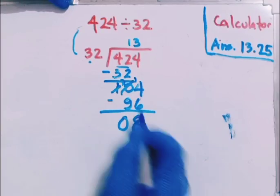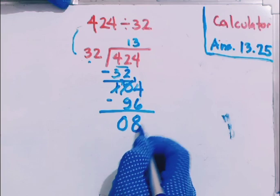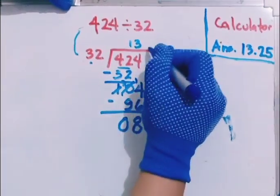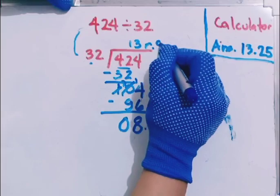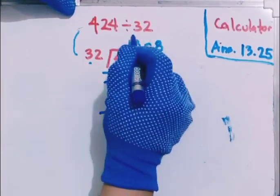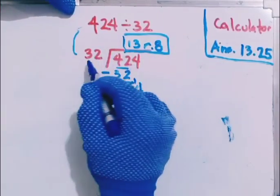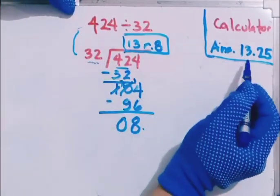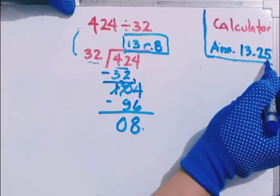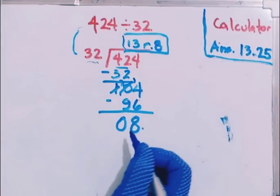Now 8 divided by 32, can it be? No, because 8 is lower than 32. Therefore 8 will become your remainder. Remainder 8. But the answer we get from the calculator, if we divide 424 divided by 32, we get the answer 13.25. How did it arrive at 13.25? We will do that here.